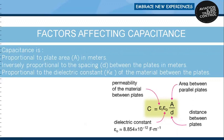Factors affecting capacitance: capacitance increases as the area of overlap increases, since a larger plate area provides more room to accommodate increased charge. Thus capacitance is proportional to plate area. Also, capacitance increases as the distance between the plates decreases, since the electric field then becomes more concentrated. Thus capacitance is inversely proportional to the spacing between the plates.